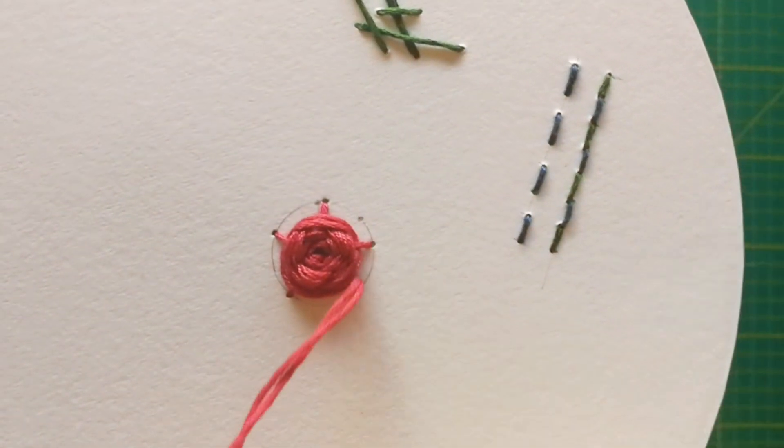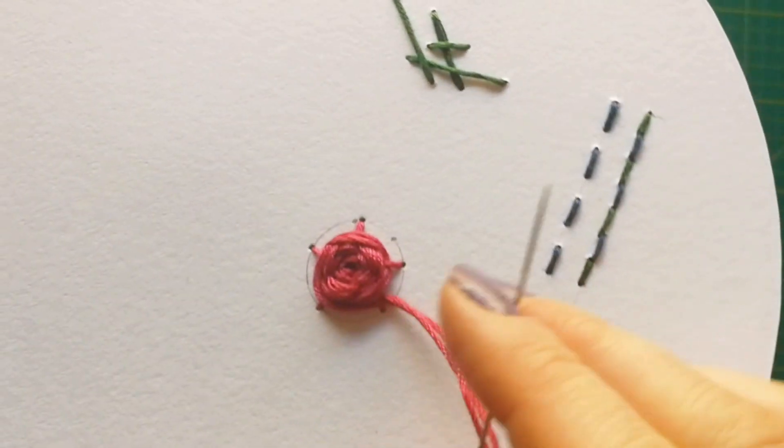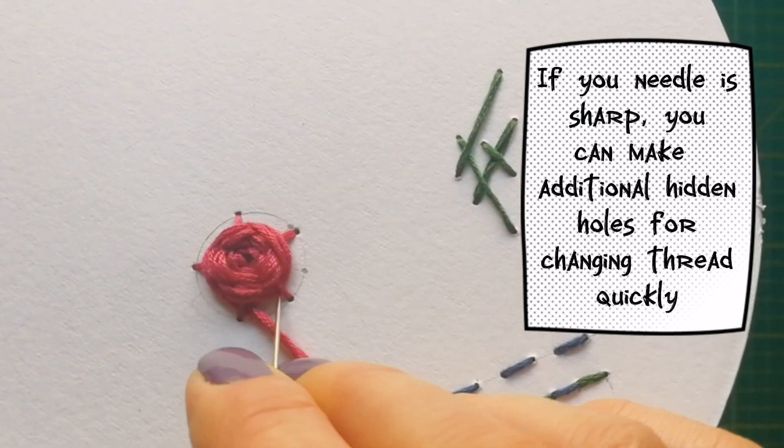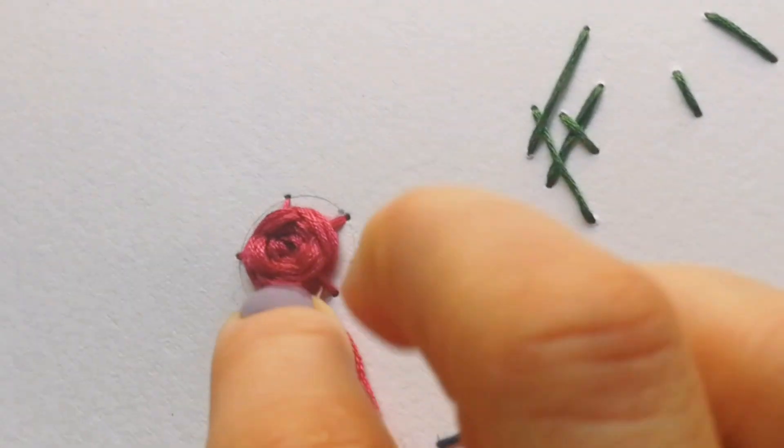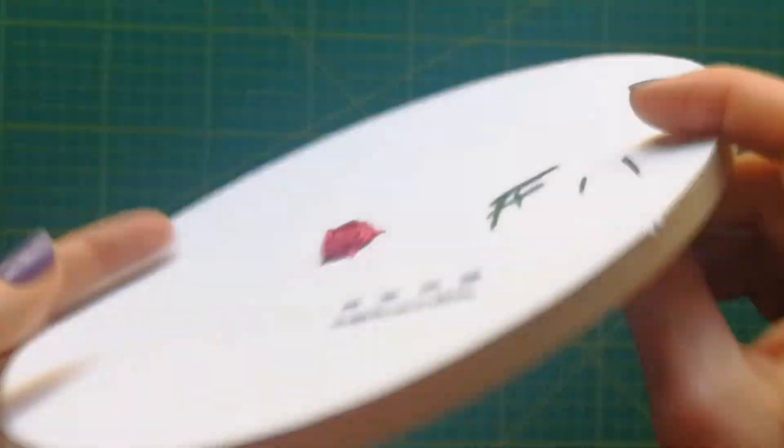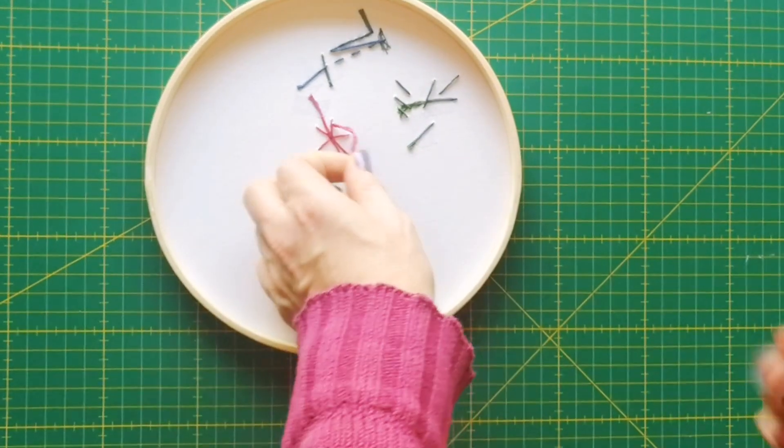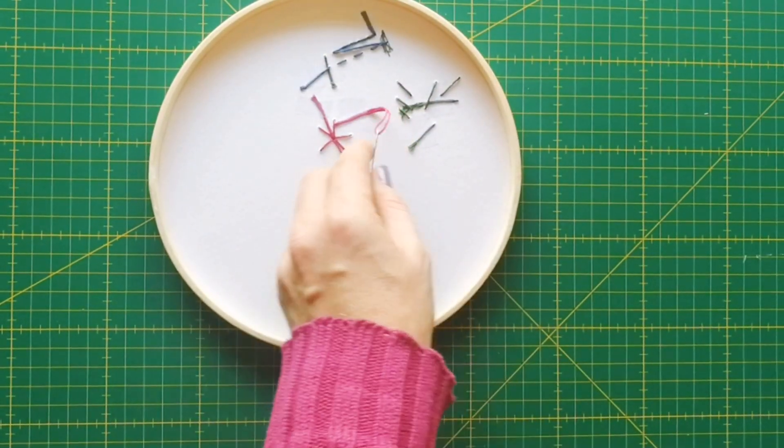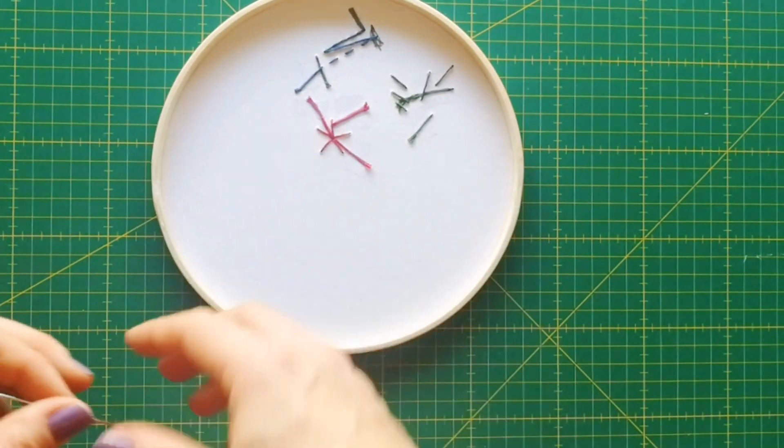As you can see, our rose is not yet finished, but we need to change the thread because my thread is too short now. So I will just go with this leg and poke under, just pushing through to hide it. And then I will turn around, secure it with thread, cut away, and insert new thread and start again where I finished.